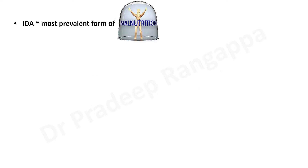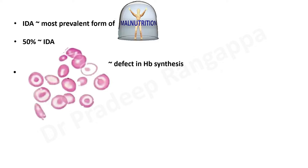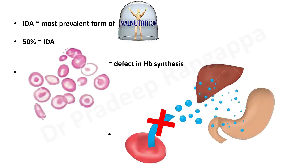Iron deficiency anemia, which we call IDA, is the most prevalent form of malnutrition, and 50% of anemias are known to occur due to iron deficiency. In iron deficiency, the striking feature is the microcytic hypochromic picture — hypochromia and microcytes — predominantly due to a defect in hemoglobin synthesis. There is a defect in hemoglobin delivery to the tissues, so tissue hypoxia can later set in with advanced anemias. There is failure of red blood cells to produce hemoglobin, and oxygen delivery to the tissues suffers.